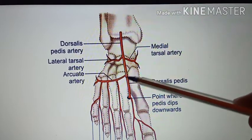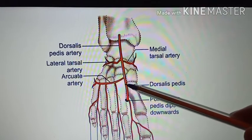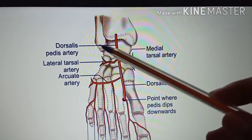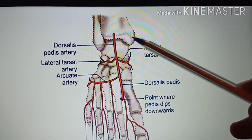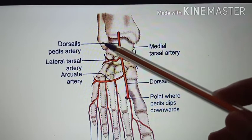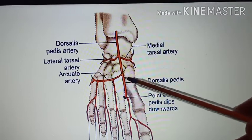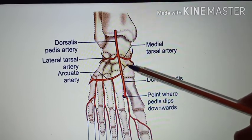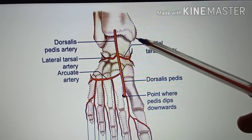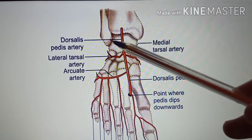Looking at this picture, this is the dorsalis pedis artery. This is the lower end of the tibia and this is the lower end of the fibula. This is the medial side, so this is the medial malleolus and this is the lateral malleolus. Coming to the course of this dorsalis pedis artery, it begins in front of the ankle in between the medial malleolus and the lateral malleolus.